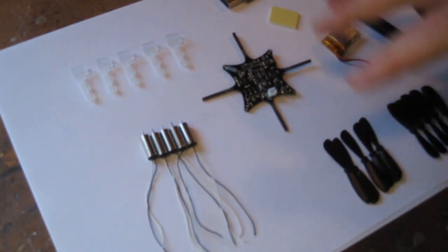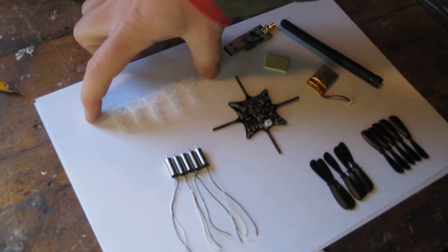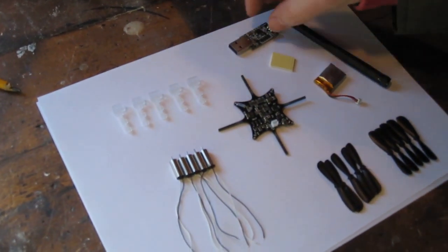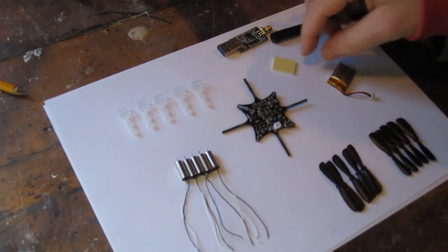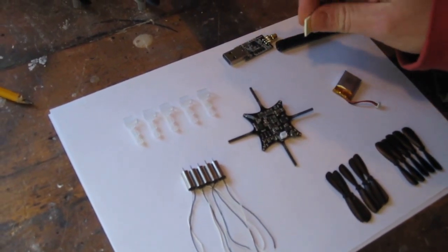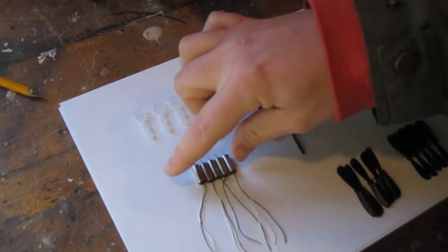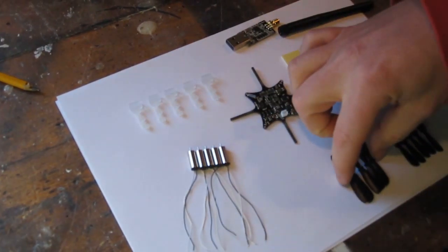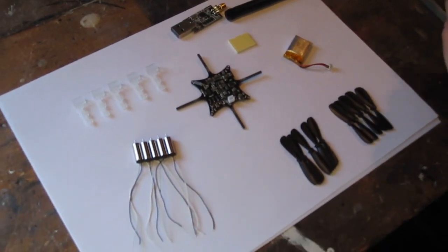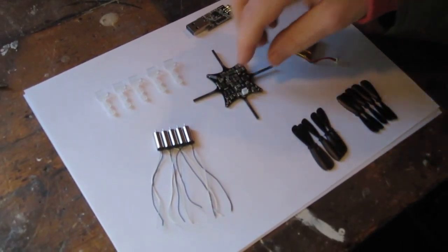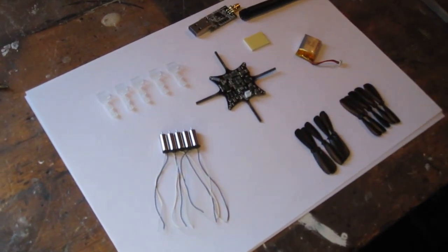So this is everything that's included in the kit. We have 5 motor mounts, the crazy radio and the antenna, the battery and the sticky pad to attach the battery, the Crazyflie of course. 5 motors and 10 propellers, 5 of each, clockwise and counterclockwise. So there is 1 spare motor, 1 spare motor mount and some spare propellers.